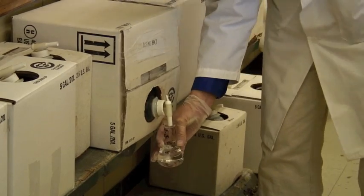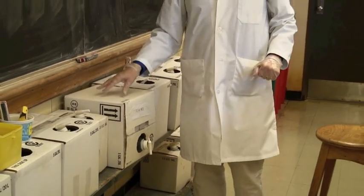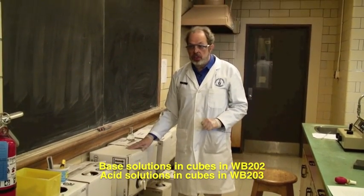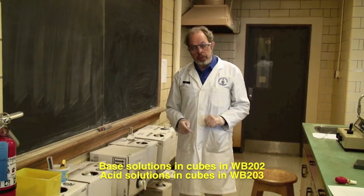Make sure that you turn the tap off so that we don't have dribbling happening. Acids are found in this room, 203. If you need bases, and you will need base for your titration, you'll find that in a cube container next door in Wahlberg 202.